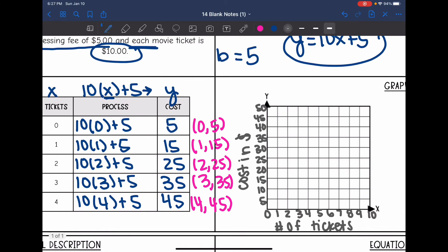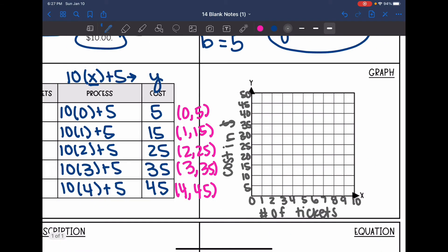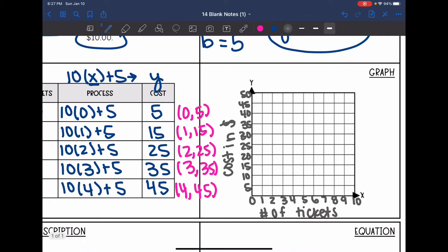I'm going to go ahead and plot these. So the first ordered pair was 0, 5. There's my y-intercept. The next ordered pair was 1, 15. Then we had 2, 25, 3, 35, and 4, 45.